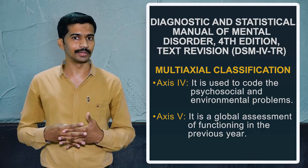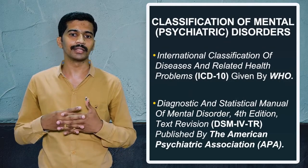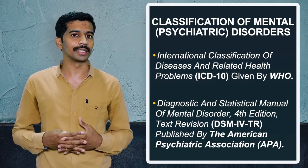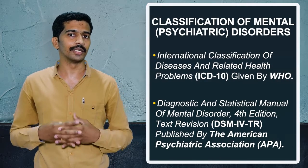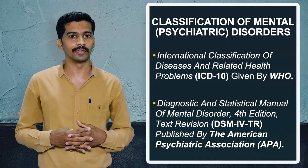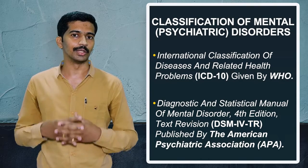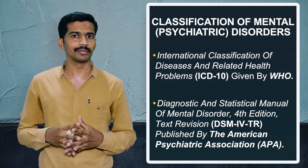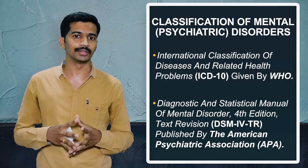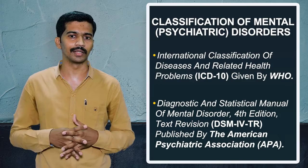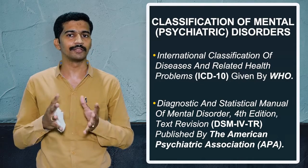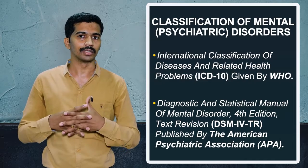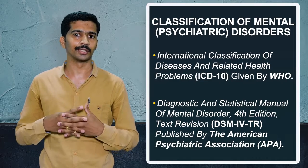These two are the main classifications we follow in psychiatry. Worldwide, ICD is followed because it is given by WHO. In India, for convenience, an Indian classification is also used, but it is not a standardized one — it may follow categories like neurotic disorder and psychotic disorder. But the first two classifications, ICD and DSM, are mainly used everywhere. Hope you all understood this topic. Thank you.